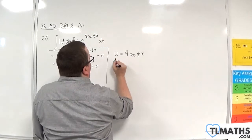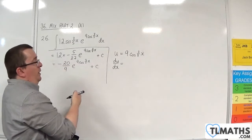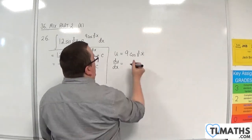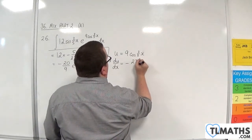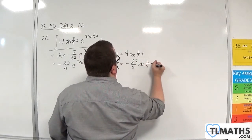So du by dx, differentiating this, so we did it a moment ago, that will be minus 27 over 5 sine of 3/5 x.